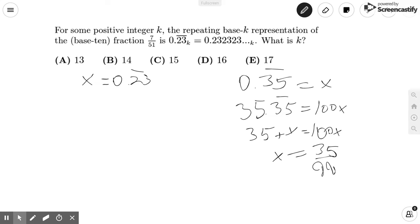So a similar approach can work in this case, except instead of multiplying by 100 as we did in here because we were in base 10, we multiply by k squared because that's how we can shift over the decimal places two spots to the right.